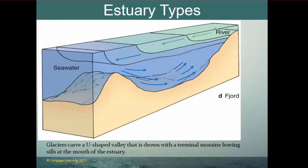In a fjord estuary, a glacier carves out a U-shaped valley and at its furthest extent deposits a terminal moraine — a mound of sediment at the glacier's endpoint. That terminal moraine acts as a sill at the mouth of the estuary, creating a fjord estuary with a layer of fresh water on top and salt water on the bottom. Other moraines are also left behind as the glacier retreats.